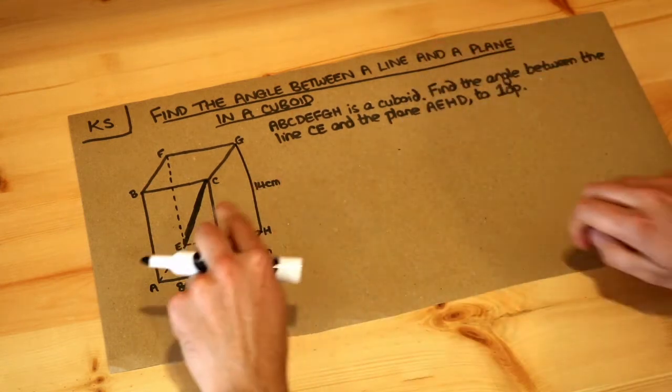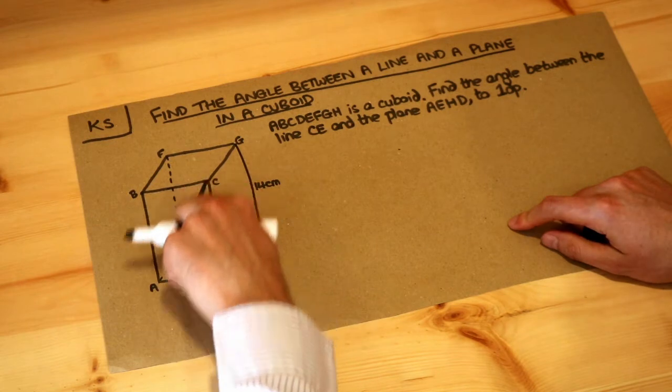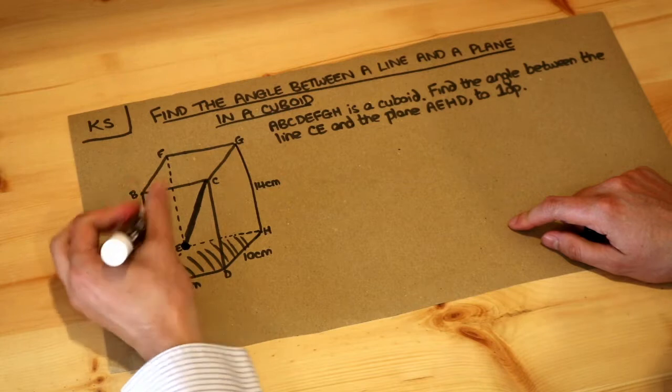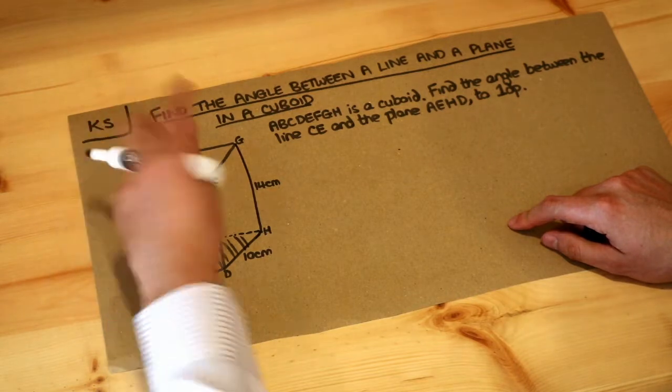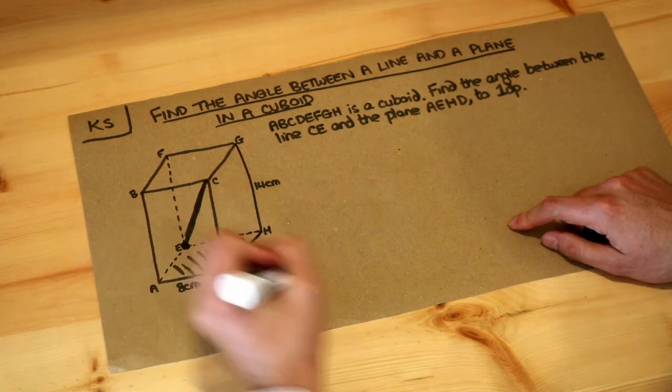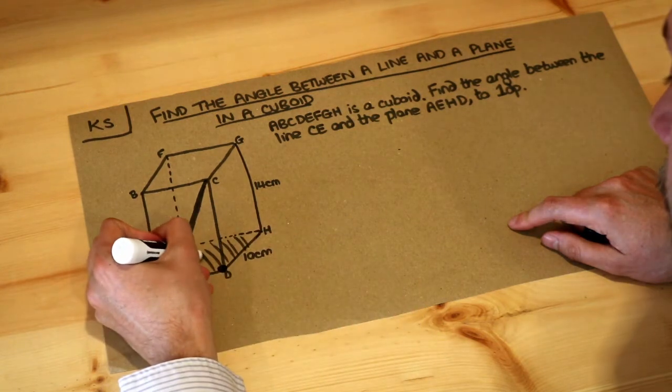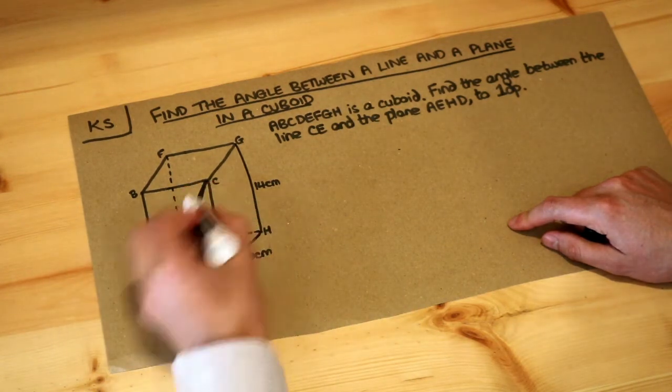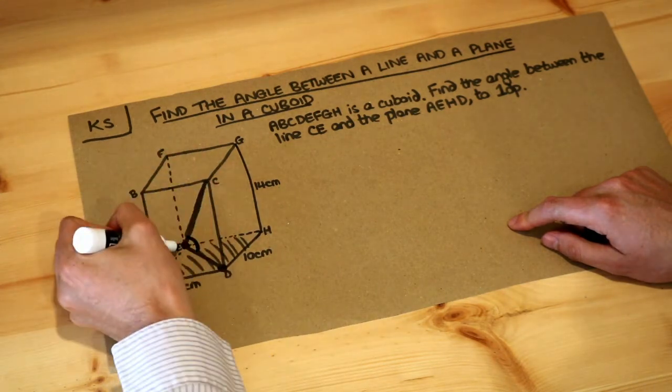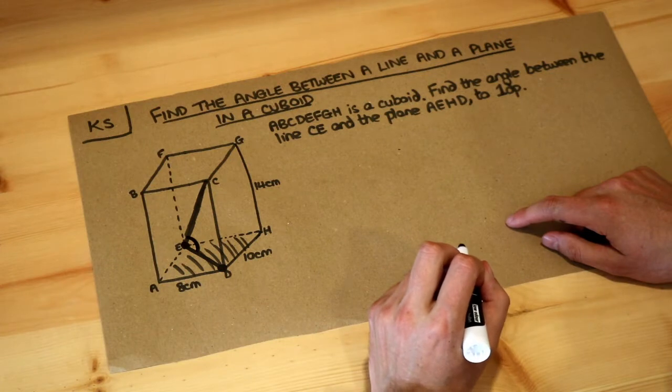So if we do the same here, we're going to drop the line EC onto this plane here. Well, E is already on the plane so it's going to stay where it is, and C under gravity when you drop onto the plane will drop to D because D is directly under C. So it's the angle between this original line and the dropped line, that's the angle I'm going to find.